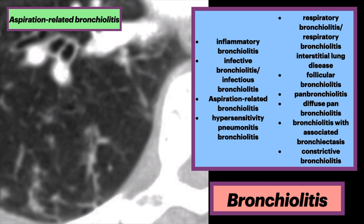This is aspiration-related bronchiolitis. This axial CT in a different patient shows centrolobular nodules and patchy ground glass opacities. The lower lobe and posterior distribution of the bronchiolitis raises aspiration as a possible etiology, typically distinguished from infection based on clinical presentation.